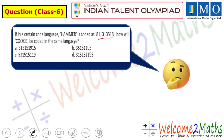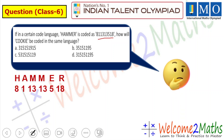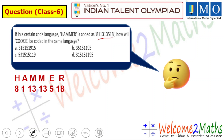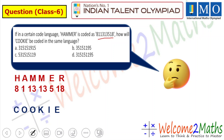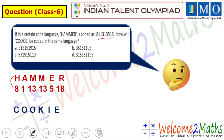Now let's check the answer. At first let's write 'hammer'. Hammer is coded in this way: 8, 1, 13, 13, 5 and 18. Then how will we write 'cookie'? Very easy — just think about English alphabets. H is the 8th letter in the English alphabet.